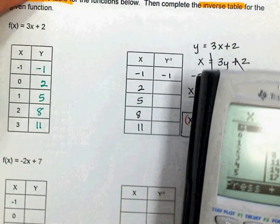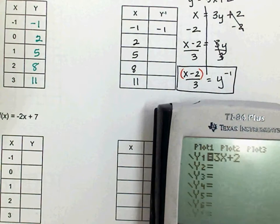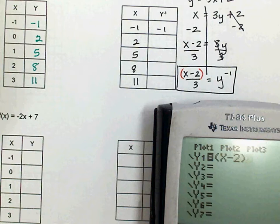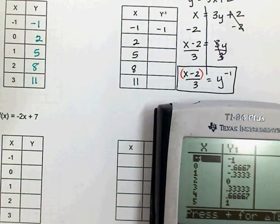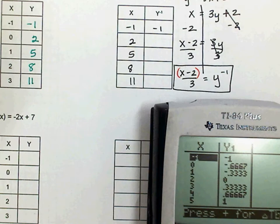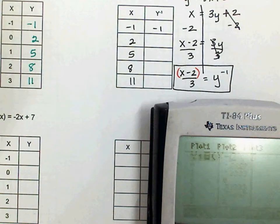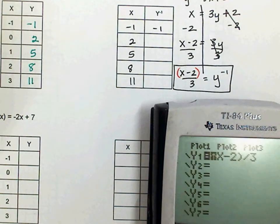Face forward, please. Type this into your calculator. Clear. Parentheses. X minus two in parentheses. Divide it by three. Second table. Everyone at second table? Make sure I typed it right. Second table.